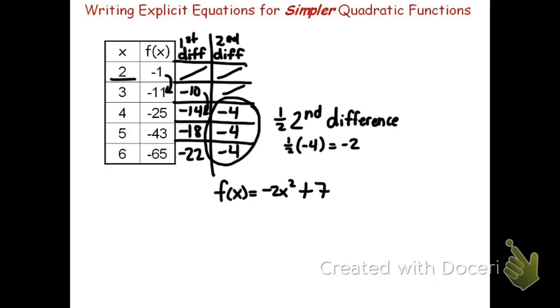For instance, if we now take the 3, we need to make sure that the equation generates a result of negative 11. Let's try it. 3 squared is 9. 9 times negative 2 is negative 18. Negative 18 plus 7 is negative 11. The equation works.